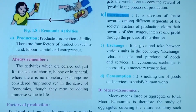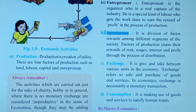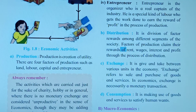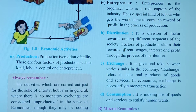The second economic activity is distribution. Distribution is the division of factor rewards among different segments of society. Once goods are produced, they are distributed in the market: from manufacturer to wholesaler, then to retailer, then to consumer. The factors of production claim their rewards of rent, wages, interest, and profit through the process of distribution. Without distribution, money would not be generated and no rewards would be paid.